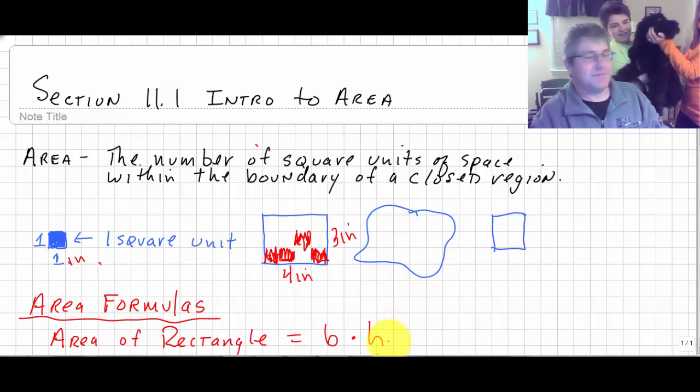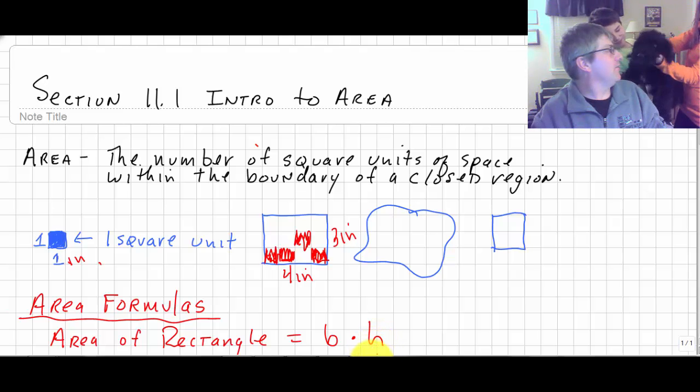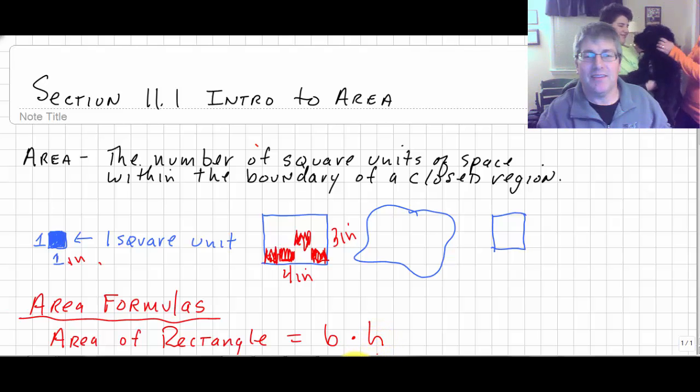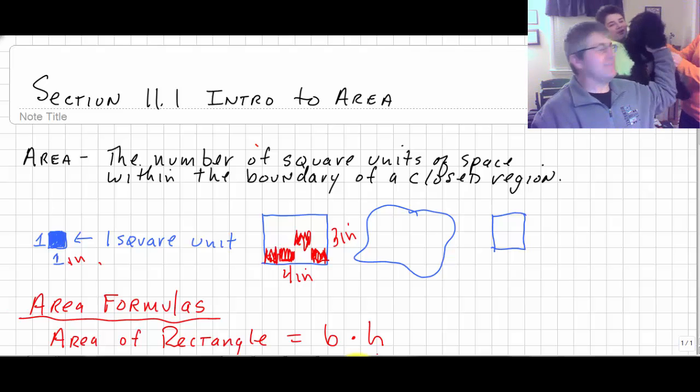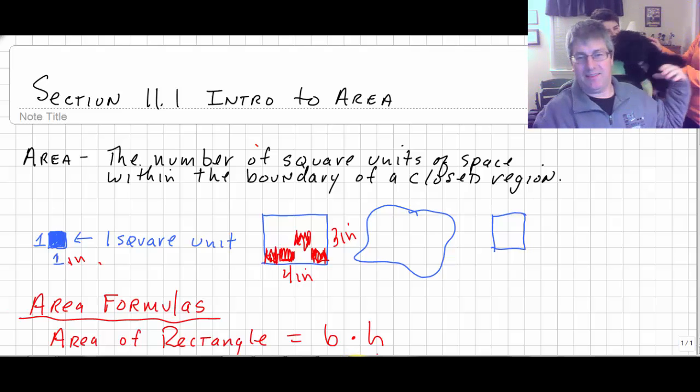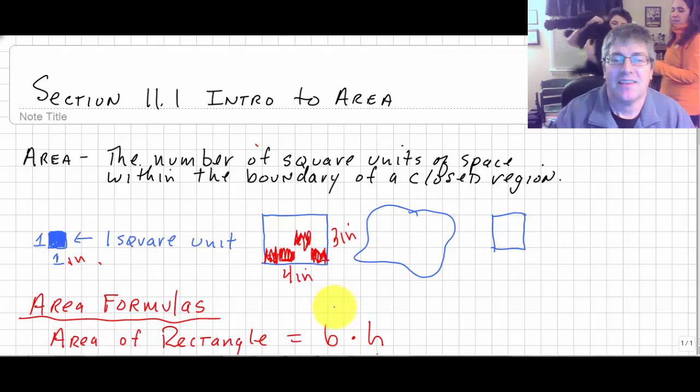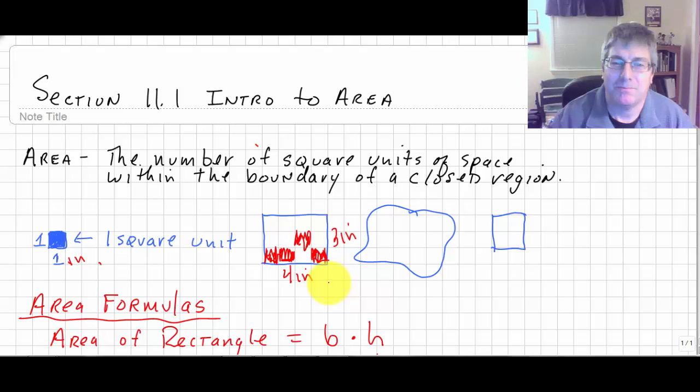And we have company. Say hi to Bailey. So there's Bailey. Bailey makes her first appearance in a video. So speaking of taking up a lot of space, she is getting there. So anyhow, this particular rectangle is four inches by three inches. You can count the squares and we have 12 squares in there, or we multiply the length and the width and we get 12 square units, or in this case 12 inches squared.